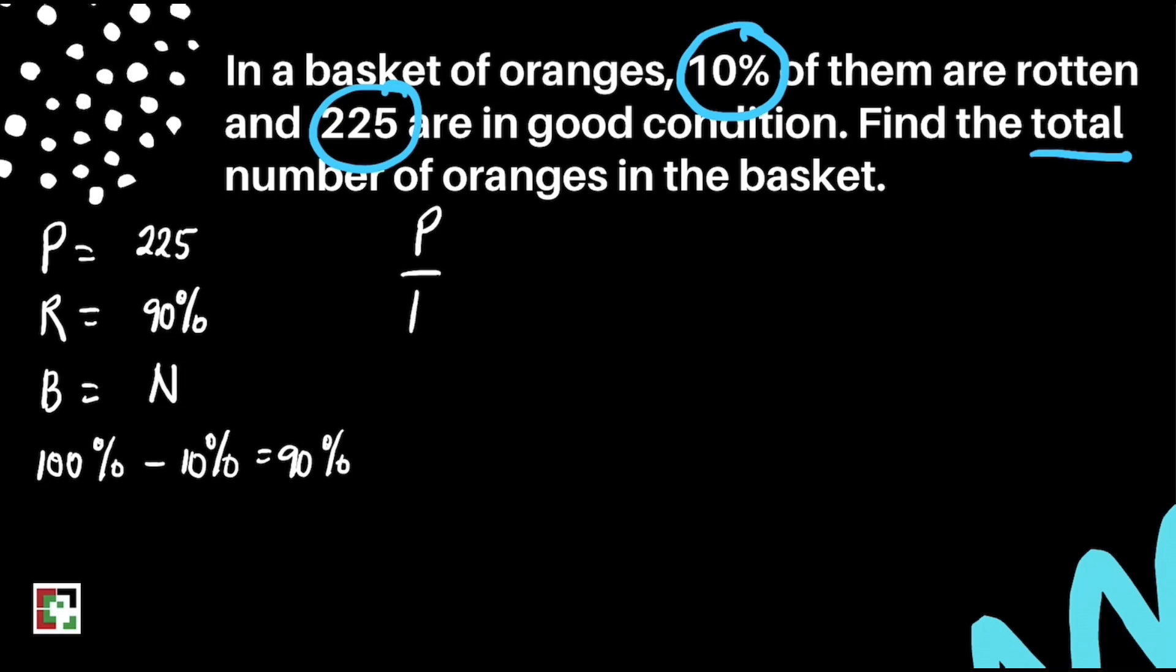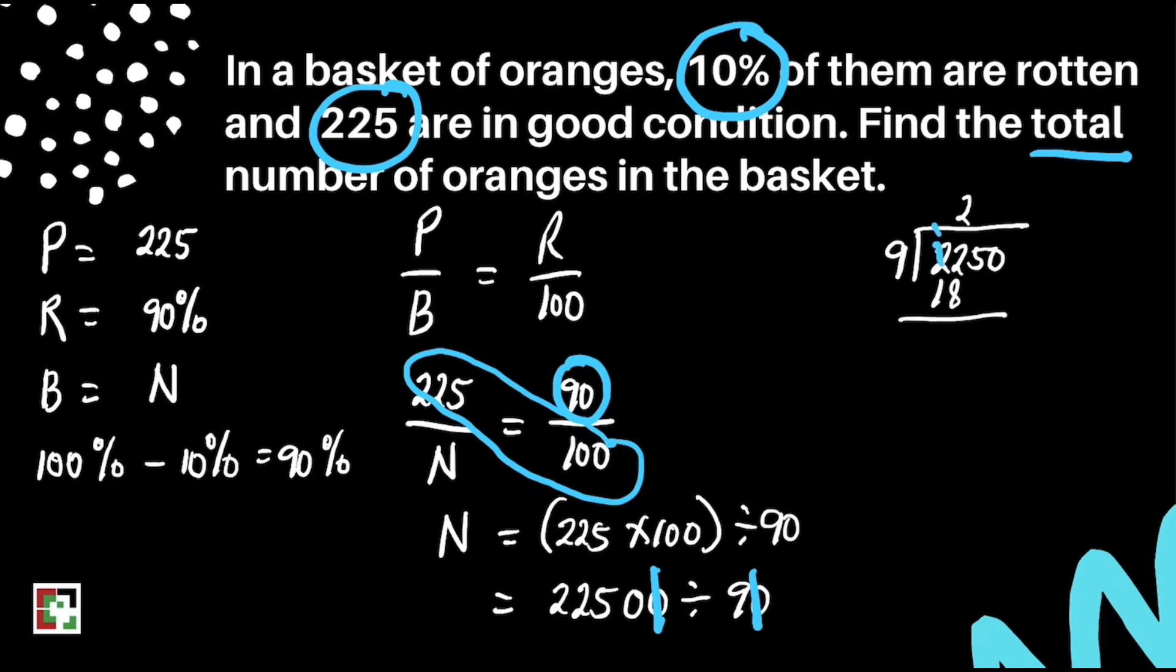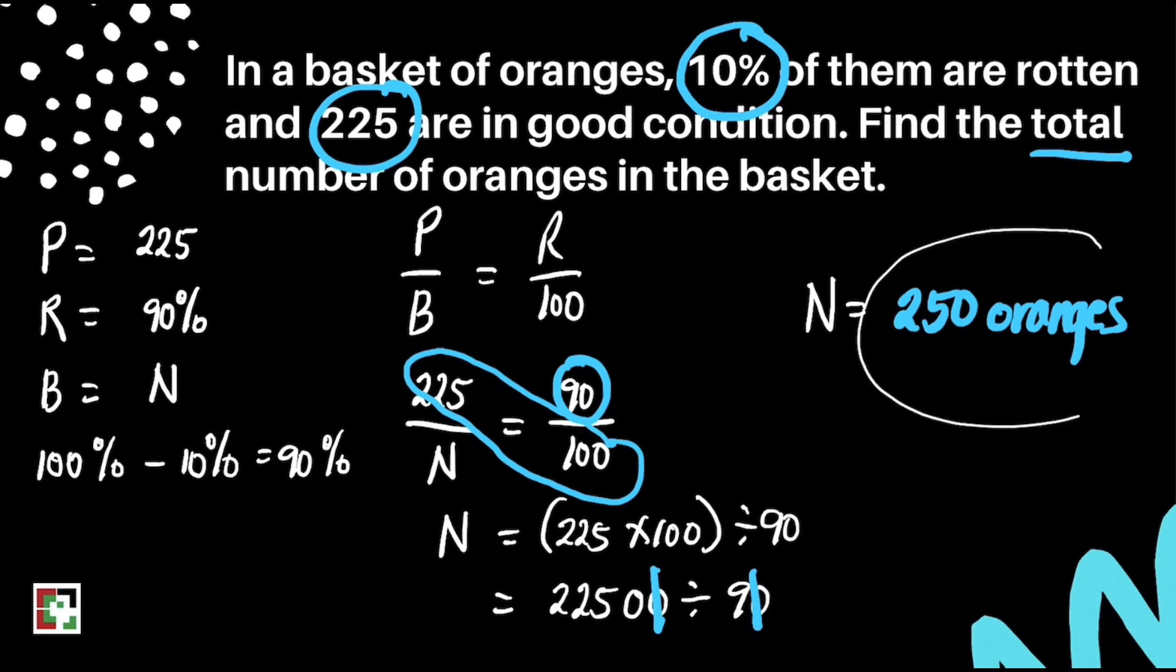We'll be using the same formula: P over B equals R over 100. Let's substitute. How to get the value of N is to do cross multiplication. That's 225 times 100 divided by 90. That's 22,500 divided by 90. We can cancel two zeros, then divide 2250 by 9, which gives us 250. It means there are 250 oranges in the basket. That's our final answer.